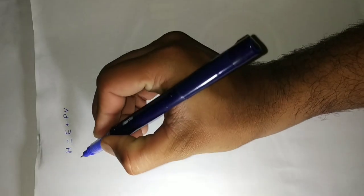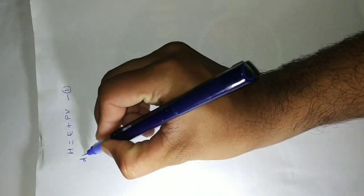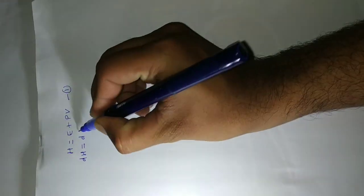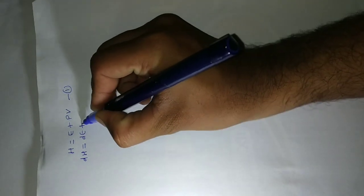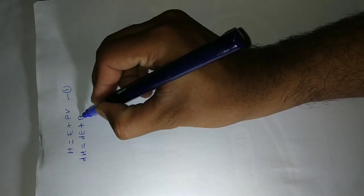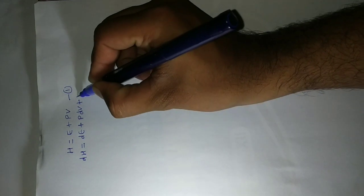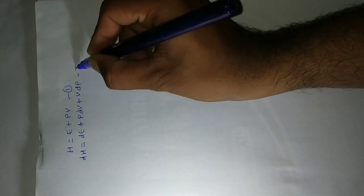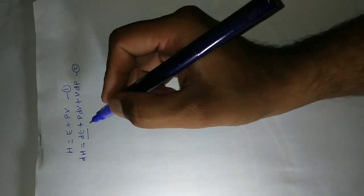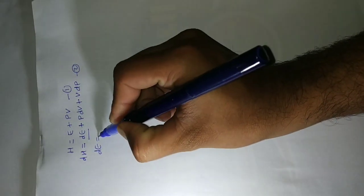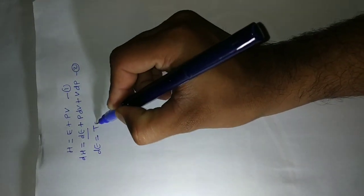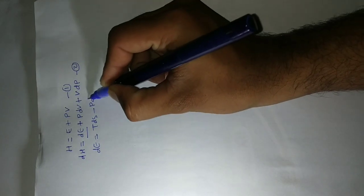If we take the differentiation of this equation, we get dH equal to dE plus P dV plus V dP. This is equation number two. Now we are going to substitute the value of dE. We know that dE is equal to TdS minus PdV — this is equation number three.